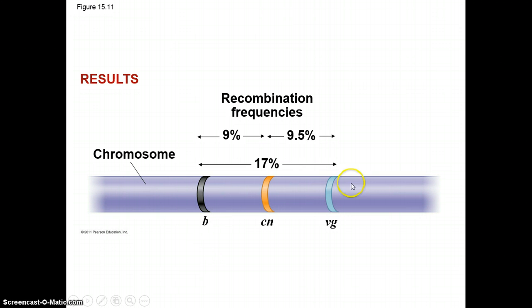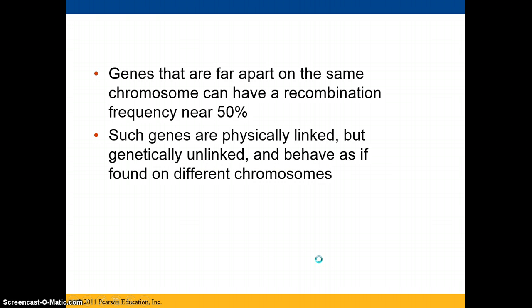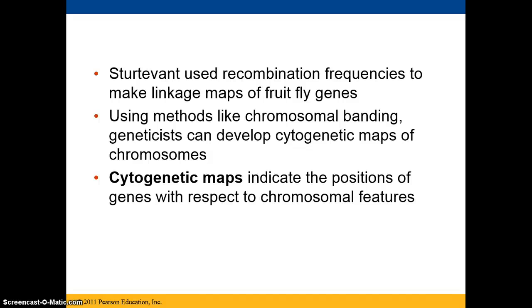B and Vg have a 17% recombination frequency. Genes that are far apart in the same chromosome can have a recombination frequency near 50%; such genes are physically linked but genetically unlinked, and behave as if they were found on different chromosomes. Sturtevant used recombination frequencies to make linkage maps of fruit fly genes using methods like chromosomal banding, and geneticists can use these methods to develop cytogenetic maps of chromosomes, which indicate the position of genes with respect to chromosomal features.